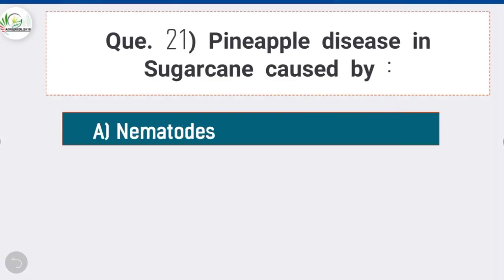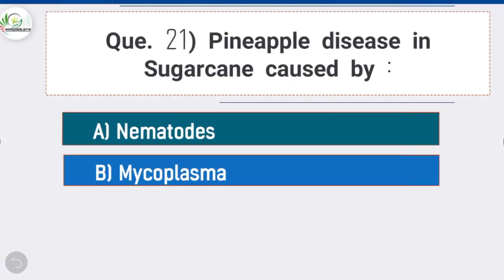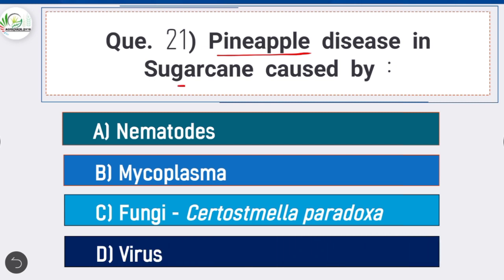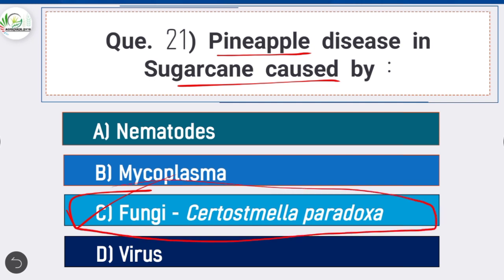Question 21: Pineapple disease in sugarcane is caused by — option C is correct: fungi. Set rot or pineapple disease in sugarcane is caused by the fungus Ceratocystis paradoxa.